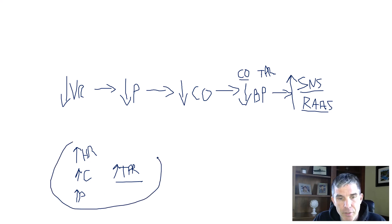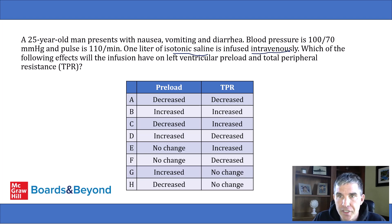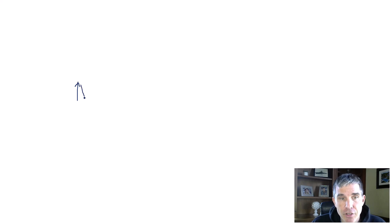All these things are going to be triggered by the sympathetic nervous system responding to the low blood pressure — that's what's happening to our patient when he initially presents. Now that we recognize he's volume depleted and understand the physiology, we read the rest of the question: one liter of isotonic saline is infused intravenously, and they want to know what's going to happen. That liter of normal saline means the volume in the venous system is going to go up, increasing venous return to the heart.